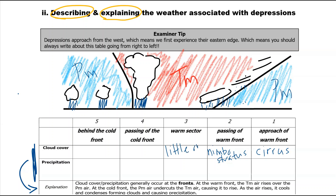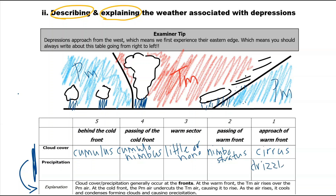Then as the warm front passes over you get nimbostratus. Then in the warm sector you get little or none — maybe a little bit of stratus. And then at the passing of the cold front you get cumulonimbus — all one word. Then after the cold front you get your cumulus clouds. As the warm front begins to approach you begin to get some drizzle; at the warm front itself, rain; then in the warm sector again little or none, maybe a bit of drizzle.